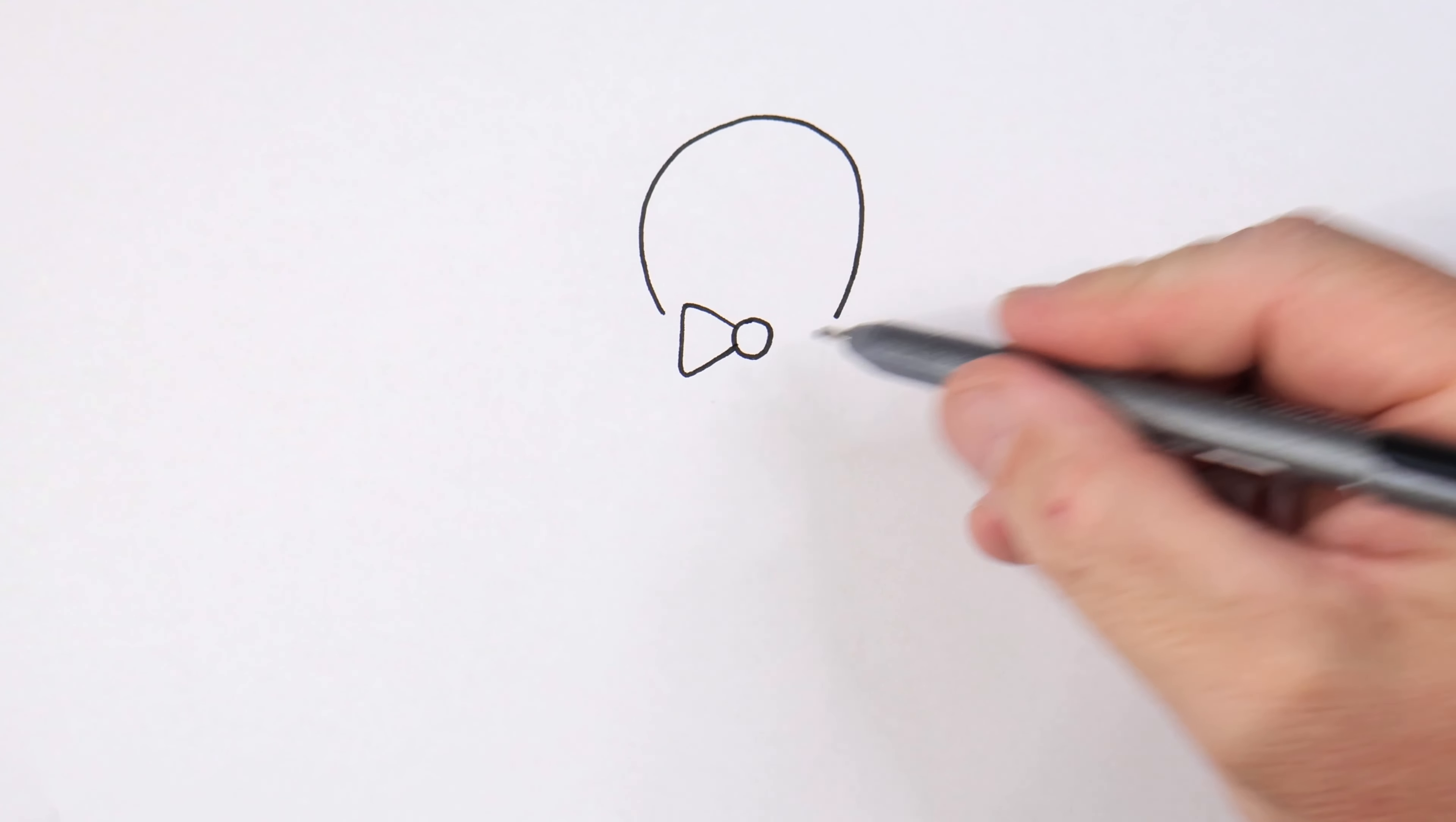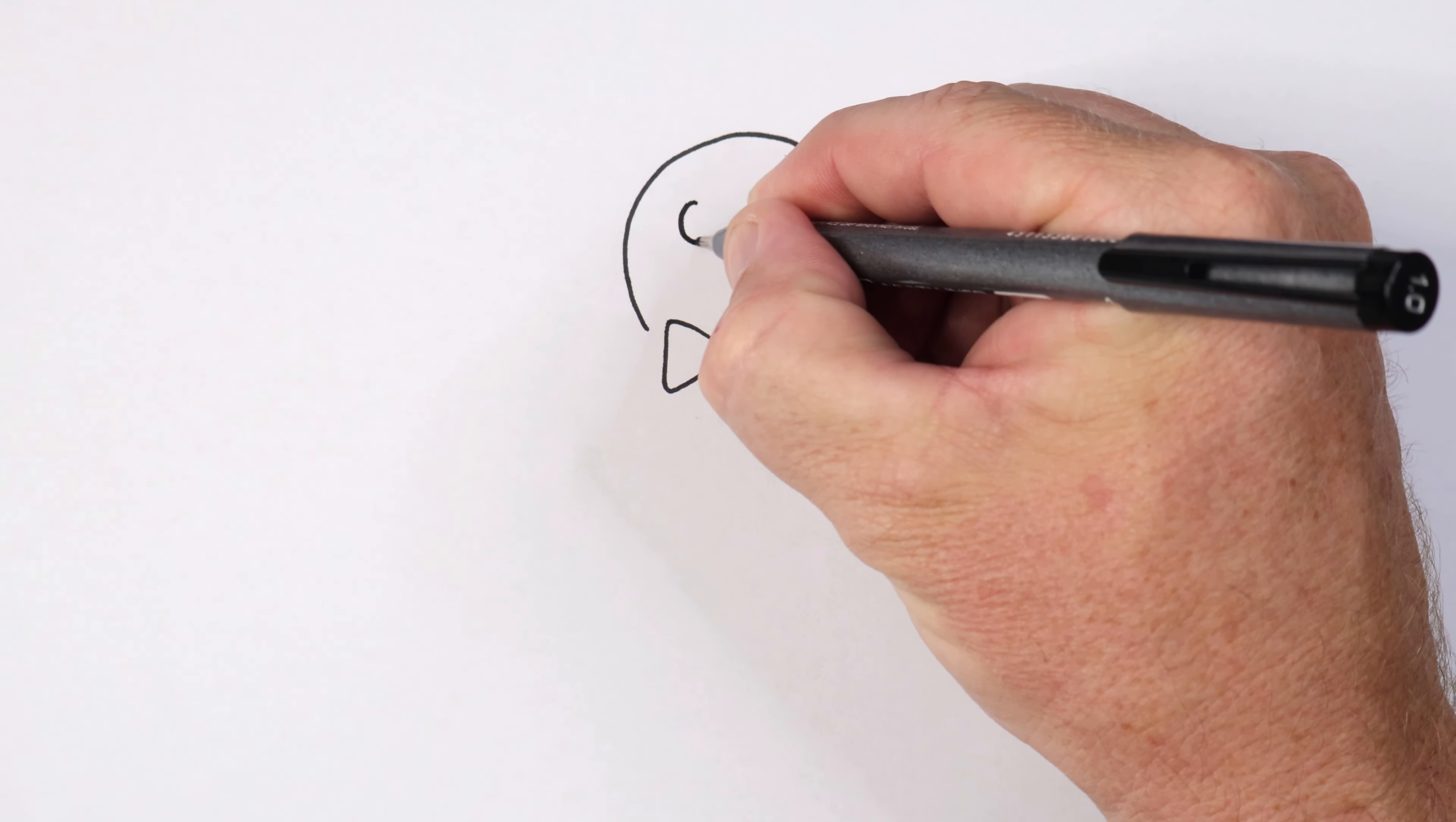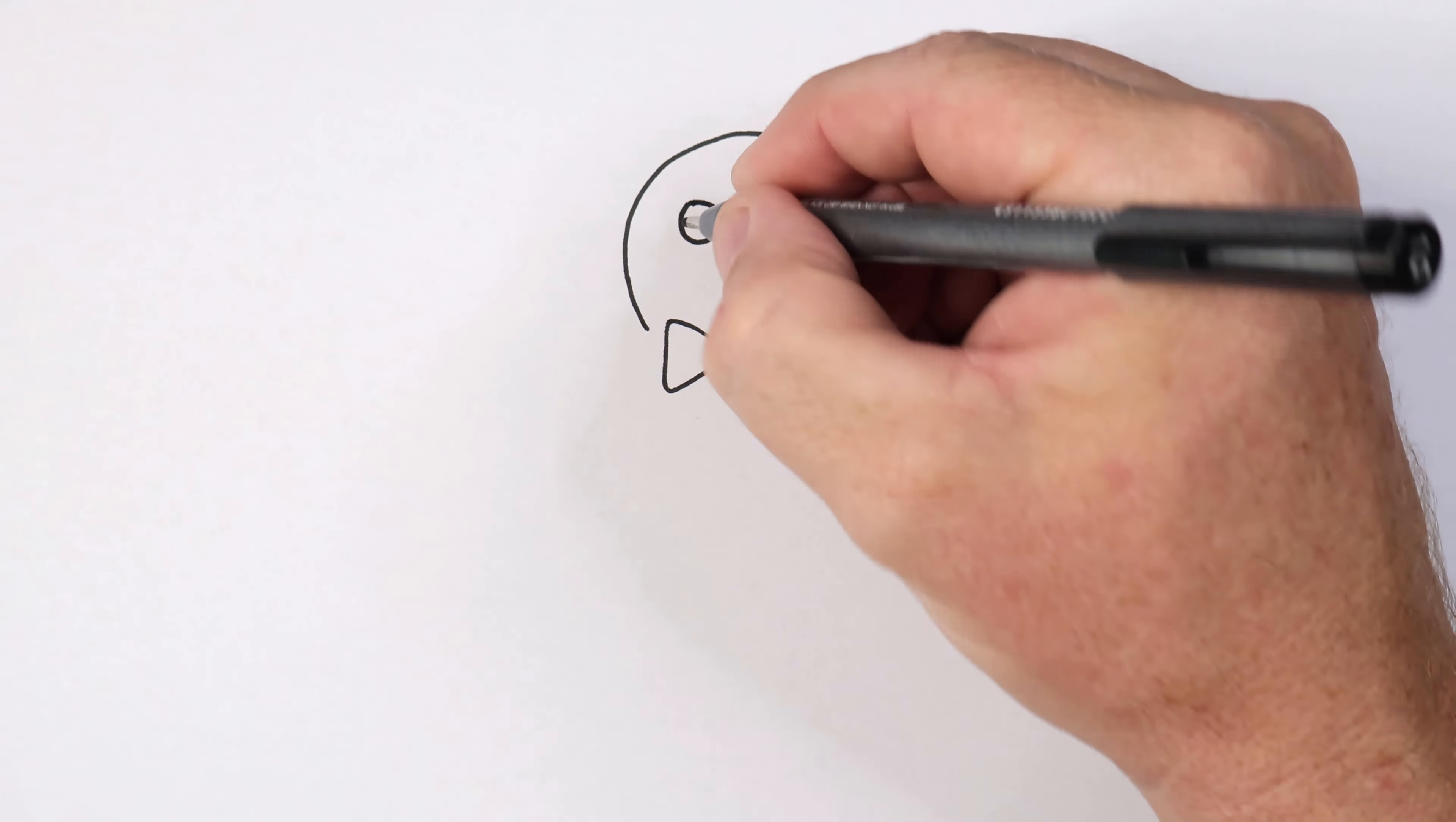Now you could put whatever face you want on, but for this one I'm just going to go with circles for the eyes. Try and keep them the same size and color them in. I'm coloring mine in black and then a cool little cute smiley mouth like so.